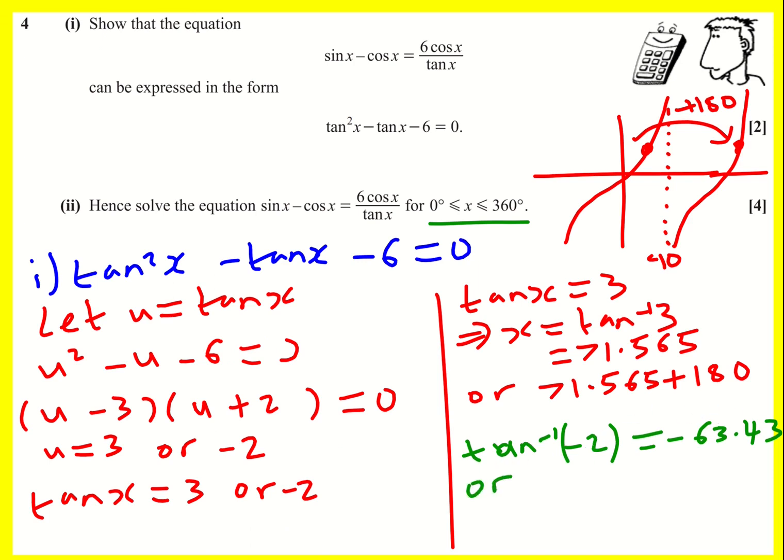But I can add 180 on. So I've just found out, basically, this one. I can add on to get that one. And there's going to be another one. It's just off the screen. It's going to be over here, and that's still going to be within, that's going to be less than 360. So minus 63.43 plus 180, or minus 63.43 plus 360.